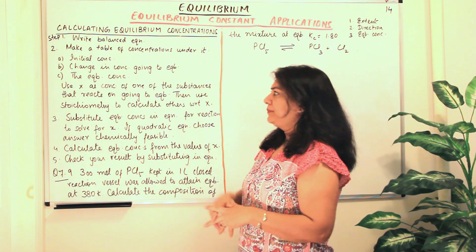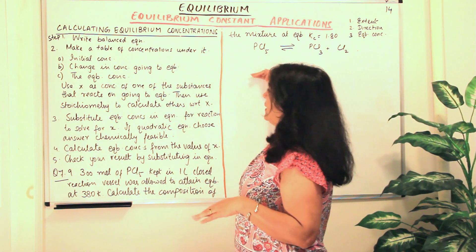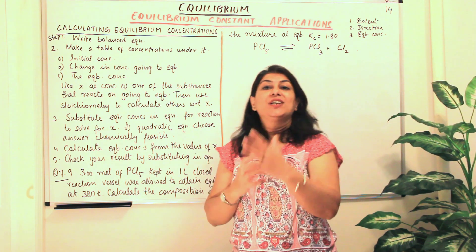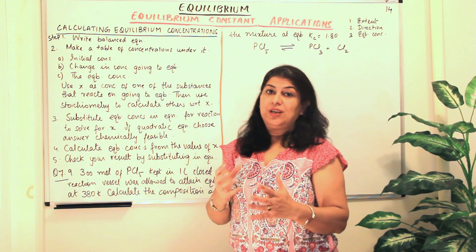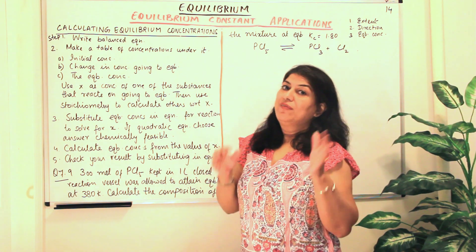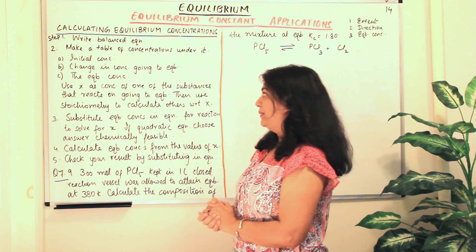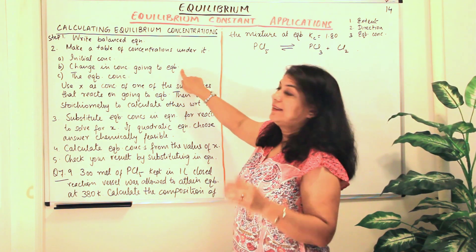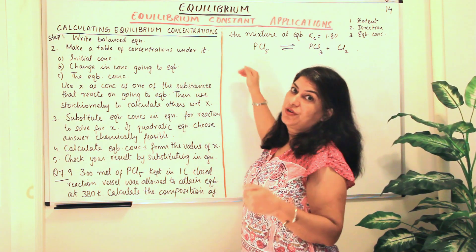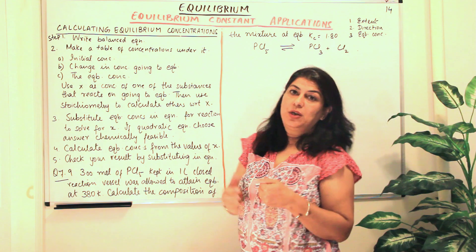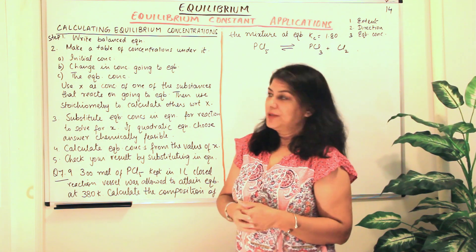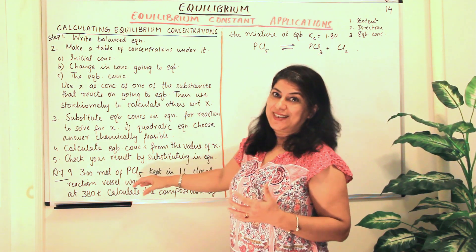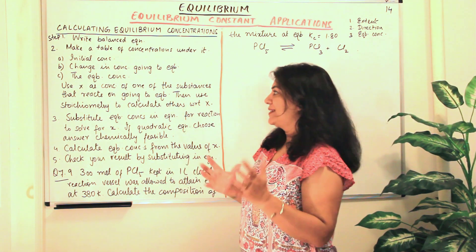Then the second row is the change in concentration — what is the change in concentration going to be when the reaction comes to equilibrium? And the third concentration that we write is the equilibrium concentrations. To explain this, we will be taking this example and you will understand it better.